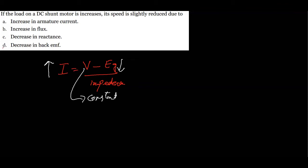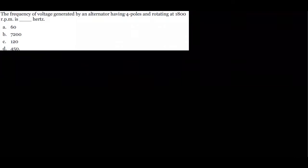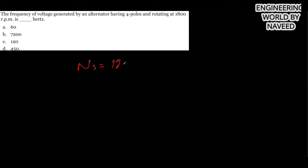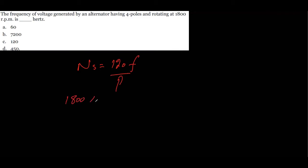The next MCQ: the frequency of voltage generated by an alternator having four poles and rotating at 1800 rpm is how many hertz? Using the formula Ns = 120f / P, rearranging: f = Ns × P / 120 = 1800 × 4 / 120 = 60 Hz. So option A, 60 Hz, is the correct answer.